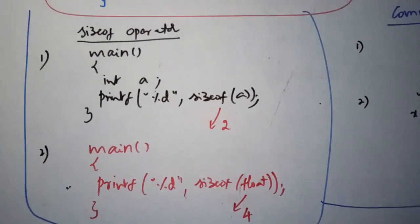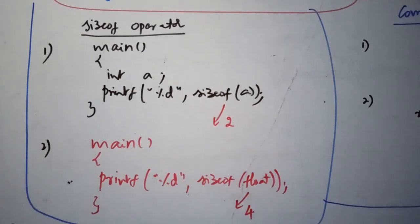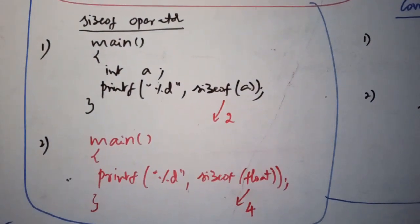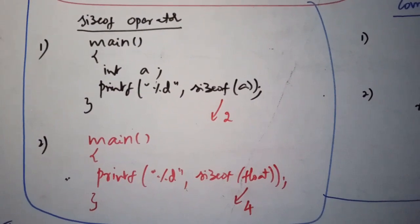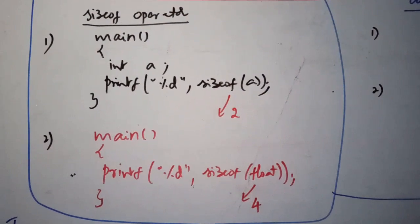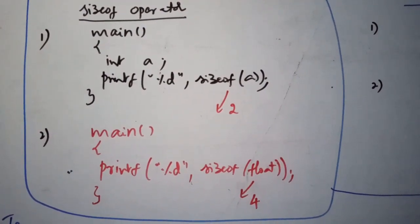Size of operator determines how many bytes a variable occupies. Means the number of bytes occupied by concerned datatype. We have three datatypes. Primary datatypes. Integer. Real. Character. That is int. Float. And char. Here. Look at the first program int a and size of a.